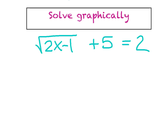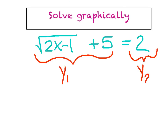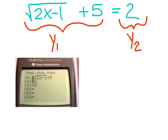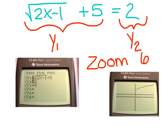Now let's solve that same equation graphically. Take a minute, find your calculator — we're going to solve this one graphically and hopefully show that we get no solution again. Take this side of the equation and throw it in y1 after you hit your y-equals button. Then take the other side and throw it in y2. Once you've placed your information in y1 and y2, remember before we hit graph, we want to hit zoom 6. That will set us up for our 10 by 10 window.